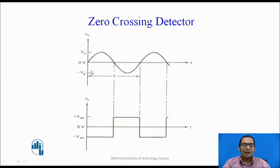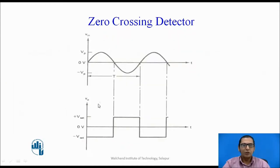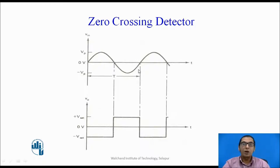Here is how it works: the input is connected to the inverting terminal and 0 volts is connected to the non-inverting terminal. For the portion where the input at the inverting terminal is greater than 0 volts, the output is minus V-sat. For the period where the input at the inverting terminal is less than that at the non-inverting terminal, the output is positive saturation. The zero-crossing detector is a special circuit because the reference voltage is 0 volts, and it can be used to convert a sinusoidal waveform into a square waveform of the same frequency — the frequency of the sinusoidal and square waveforms are the same.